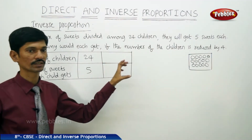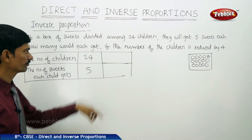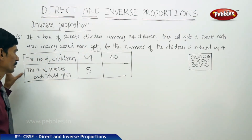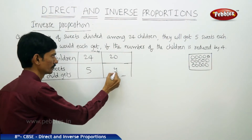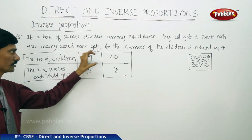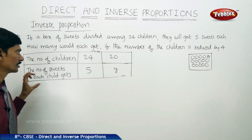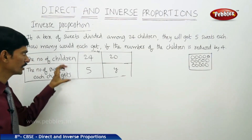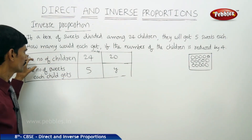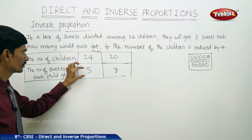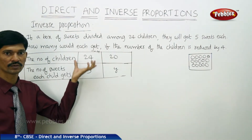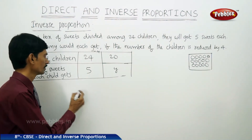The number of sweets is fixed. When there are 24 children, each gets 5 sweets. When there are only 20 children, they obviously get more sweets from the 120 total. So this is a case of inverse proportion — as the number of children decreases, each child gets more sweets.